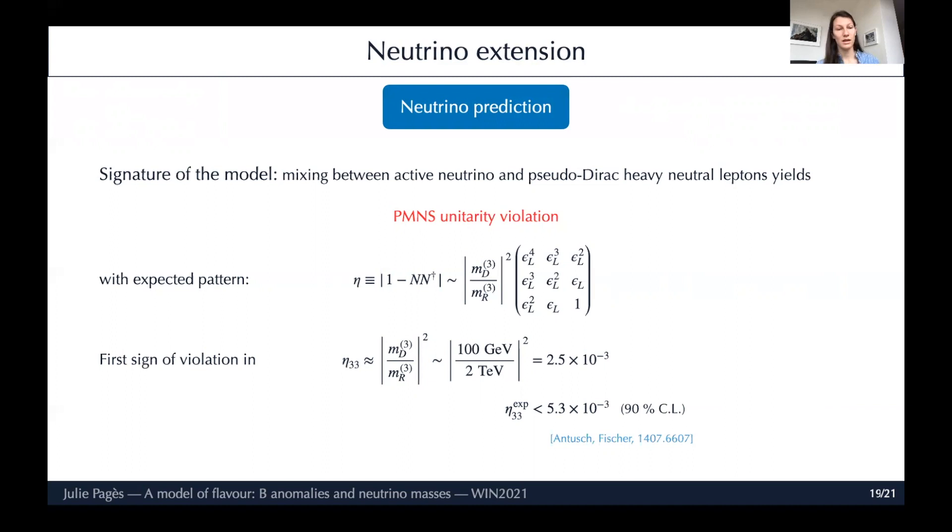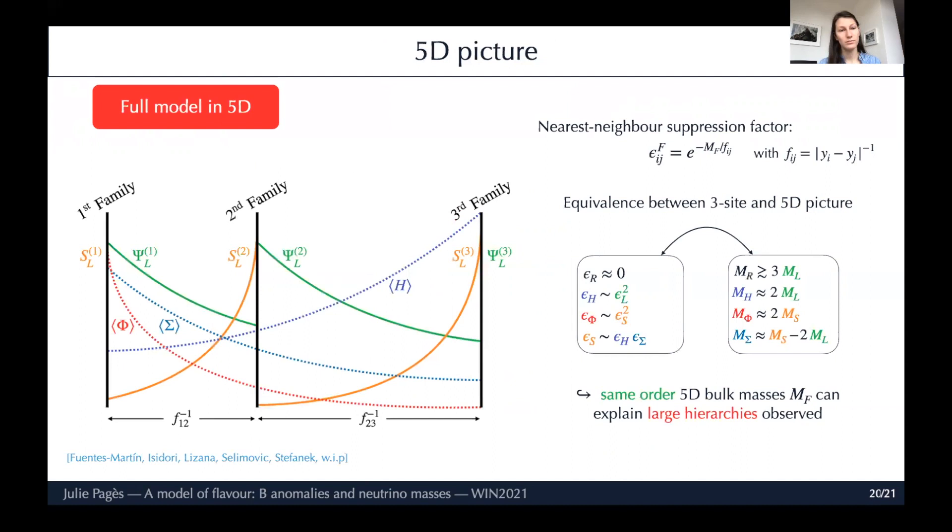What is the prediction of this model? Since we have mixing between the active neutrinos and the pseudo-Dirac heavy neutral leptons, we obviously have PMNS unitarity violation with an expected pattern like this, where you see that the dominant entry is the τ-τ entry while the other entries are flavour suppressed. This is actually close to the experimental bound, so this would be the first sign, the first prediction of our model in the neutrino sector.